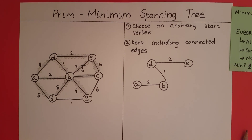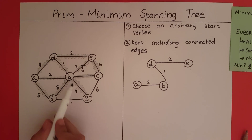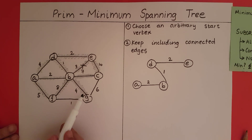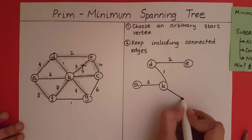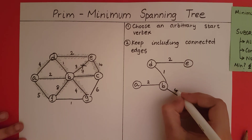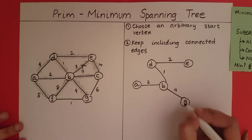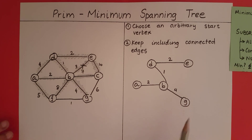So apart from this 3, what is the minimum edge? We can see that we have a 4 here, so we include this edge of weight 4.